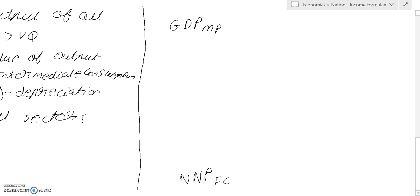In order to move from gross to net, we need to subtract depreciation. So we can say that GDP at MP minus depreciation gives us NDP at MP.